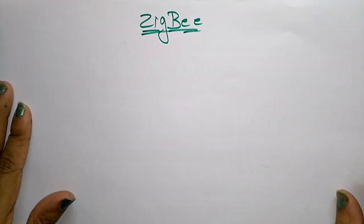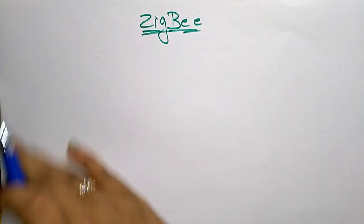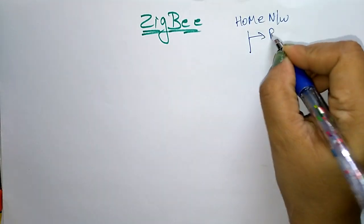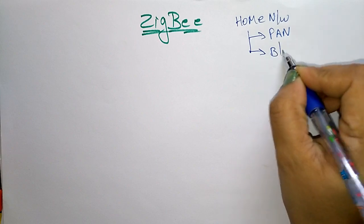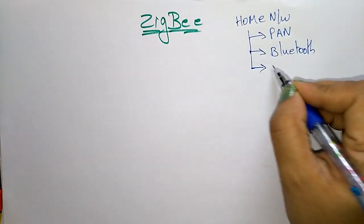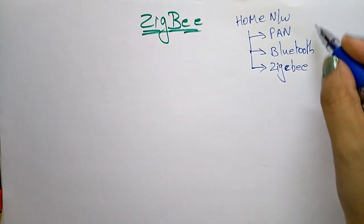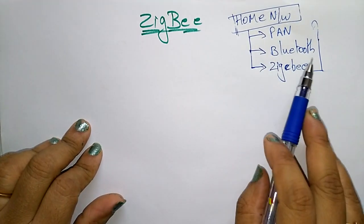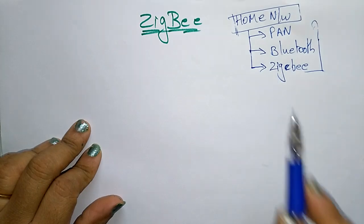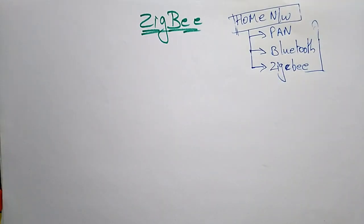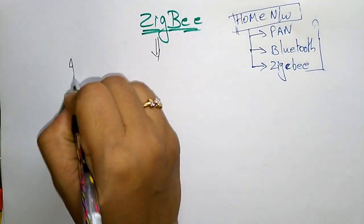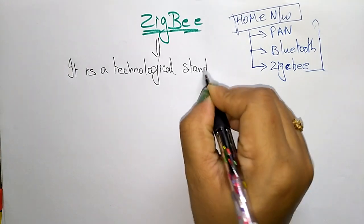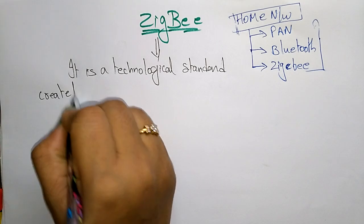Coming to the next topic in computer networks is Zigbee. In the previous videos I explained about home networks and PAN, personal area network, and Bluetooth. One more home network is Zigbee, so these three technologies come under the home network. Now let us see Zigbee — it is a technological standard created for control and sensor networks.